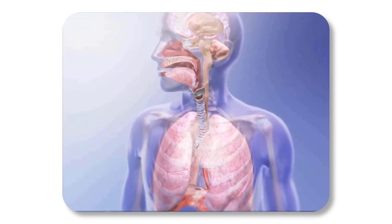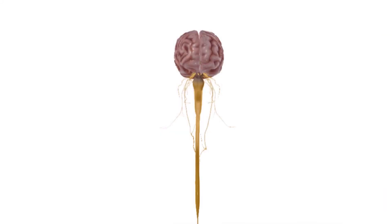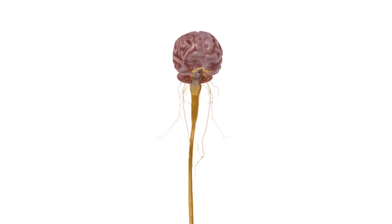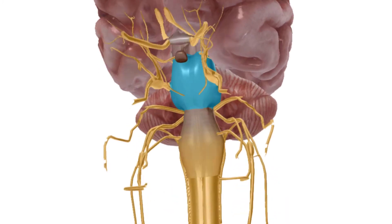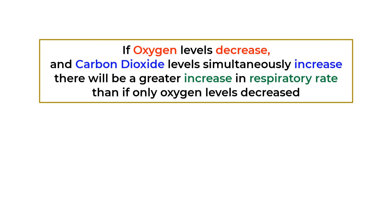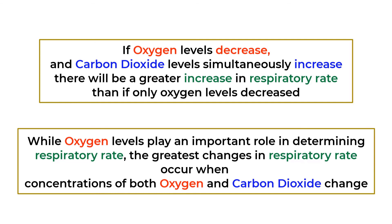However, oxygen levels do not affect blood pH. Thus, if carbon dioxide concentration is kept in a normal range but oxygen concentration in the blood decreases, the brainstem will respond by increasing respiratory rate. However, if oxygen levels decrease and carbon dioxide levels simultaneously increase, there will be a greater increase in respiratory rate than if only oxygen levels decreased. While oxygen levels play an important role in determining respiratory rate, the greatest changes in respiratory rate occur when concentrations of both oxygen and carbon dioxide change.